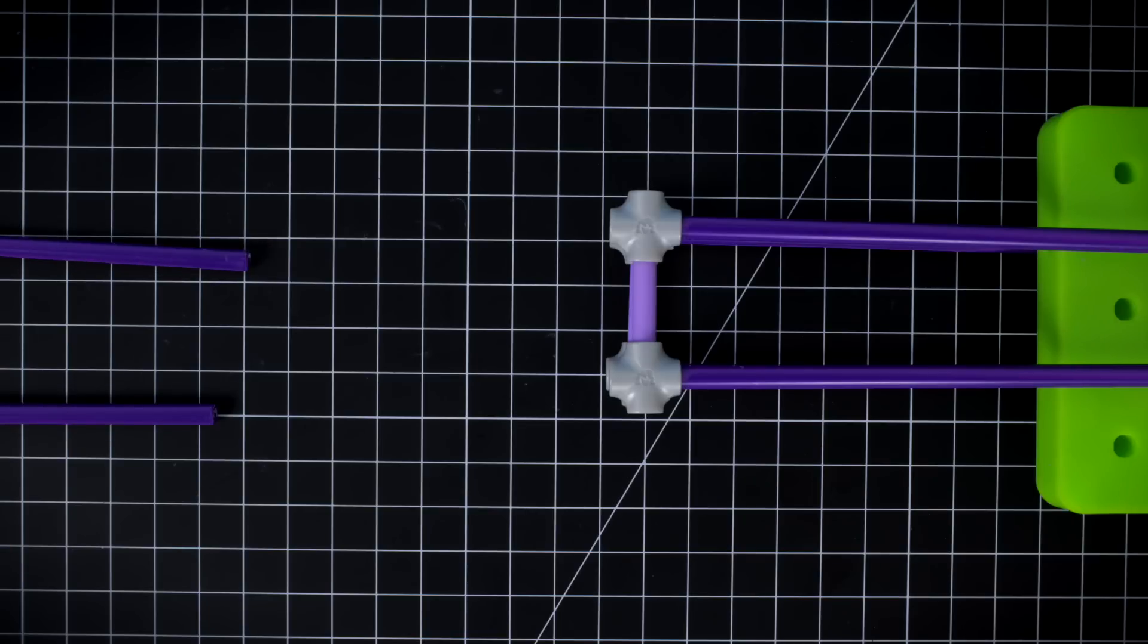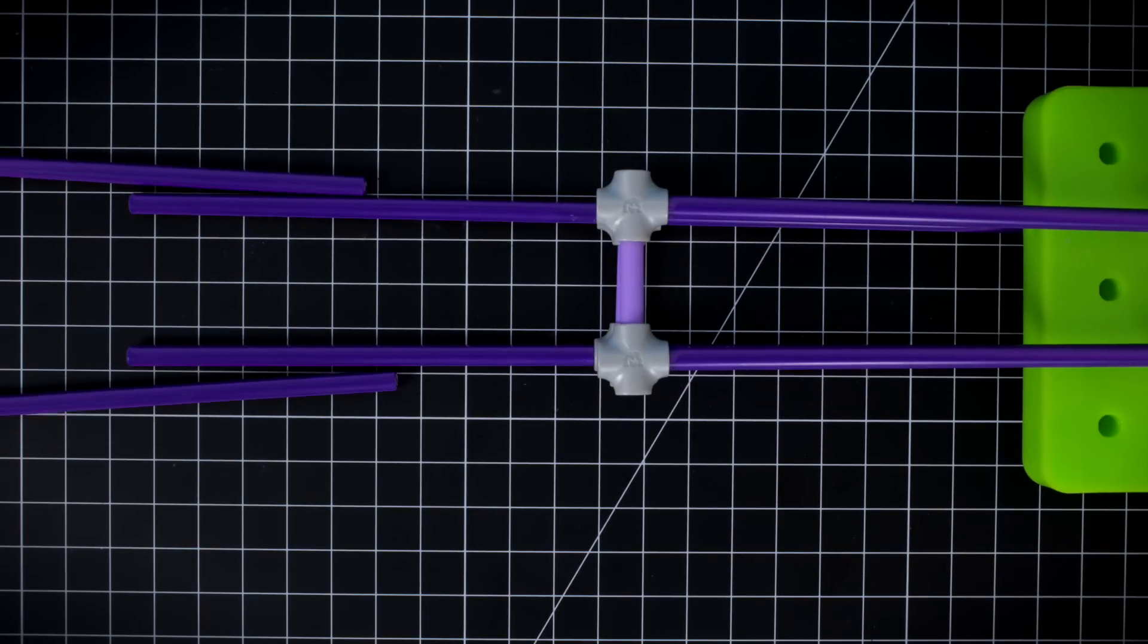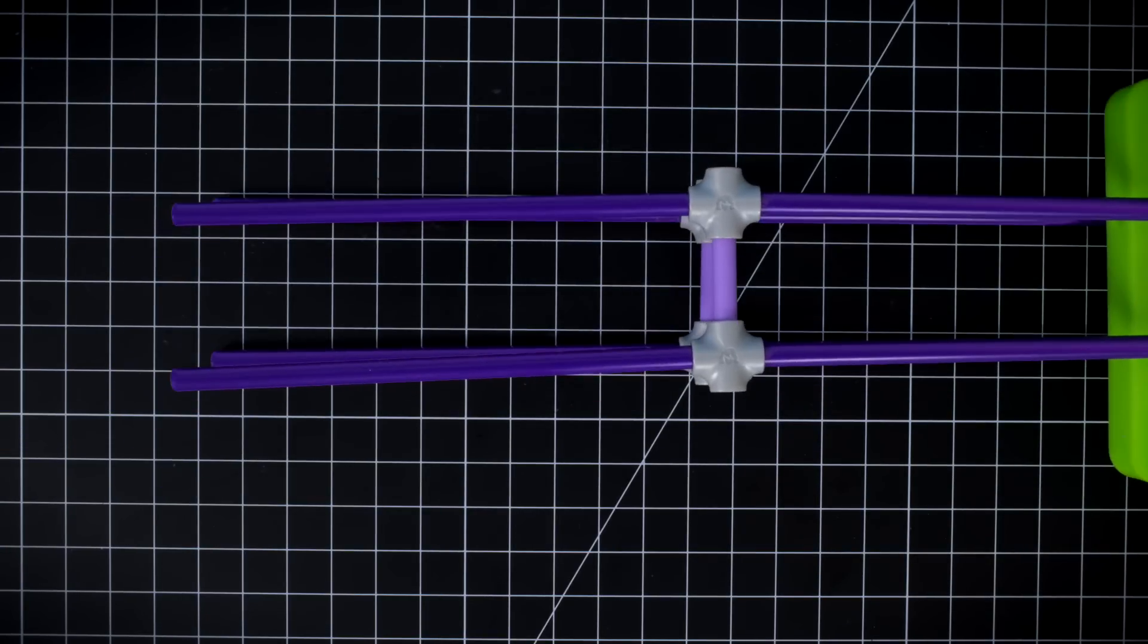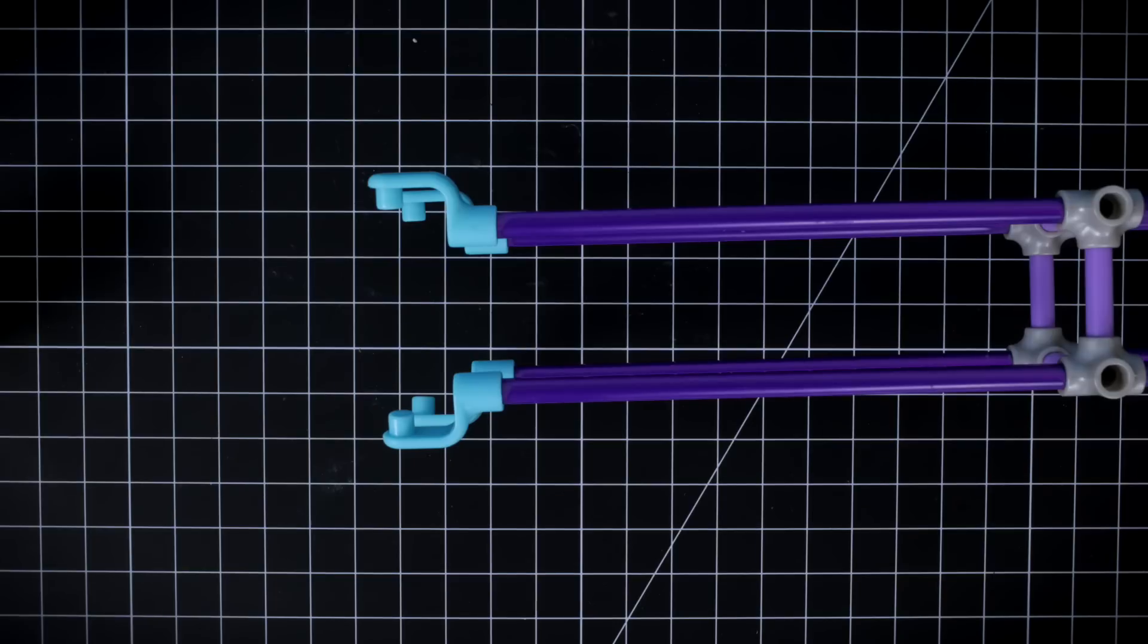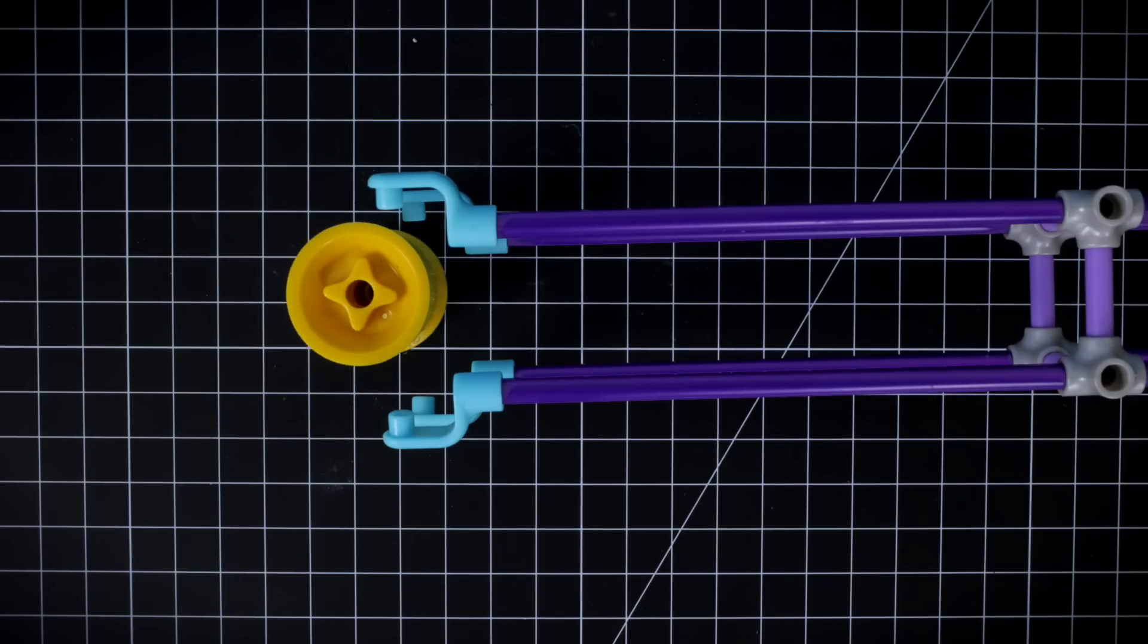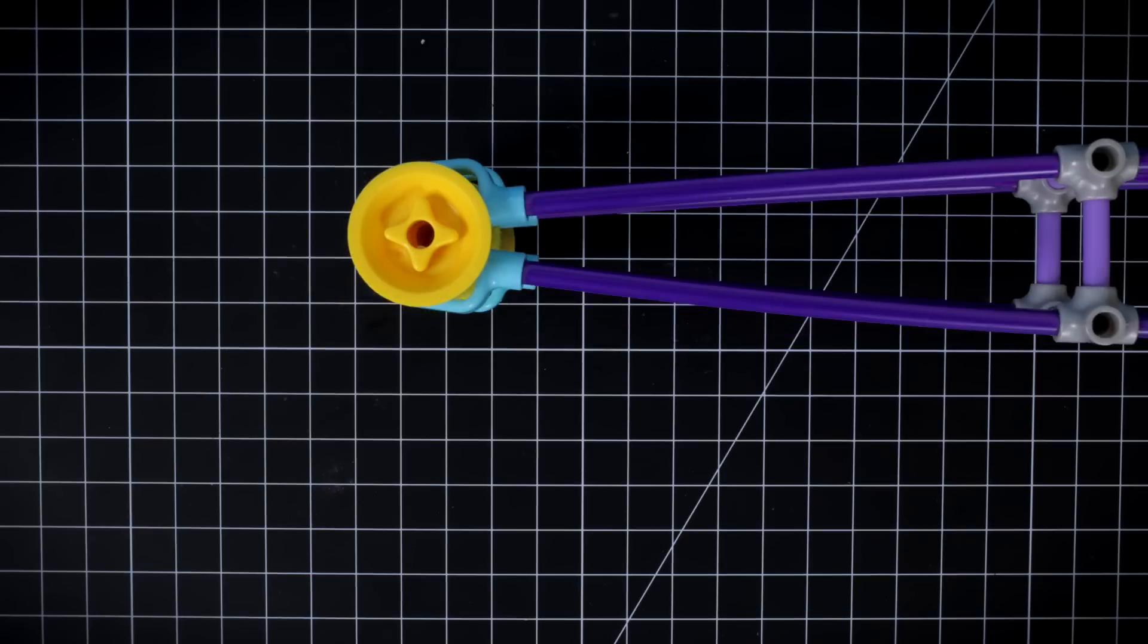Step three. Add your last four purple axles to the five-way joints. Attach the four angle joints to the ends of the axles. Finish the neck of the guitar by connecting the four angle joints to the yellow wheel.